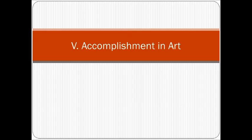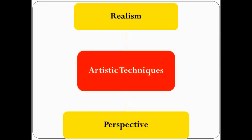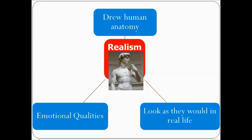In the Renaissance, you'll find a lot of paintings like the Mona Lisa and sculptures like the sculpture of David. We're going to look at two new artistic techniques: realism and perspective. Realism is drawing things as they actually look — you see drawings of human anatomy, like the sculpture of David, drawn showing David's anatomy. Paintings and sculptures show humans as they would look in real life, and they give their work emotional qualities. This is called realism.